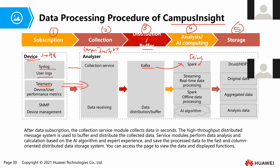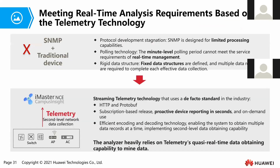After Kafka distributes the data, Spark or AI algorithms are used to analyze it. Once the analysis is complete, the data is stored in the database. When a user accesses the GUI, all information from the database is displayed. This is the overall data processing procedure for Campus Inside.